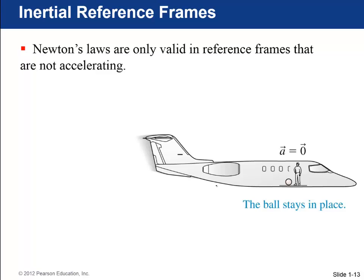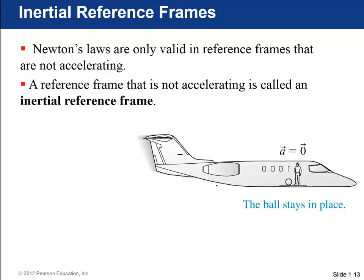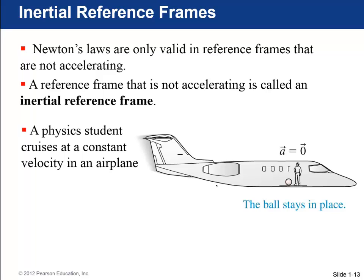Next concept in this chapter is called inertial reference frames. It turns out that these Newton's laws, like Newton's first law for example, is only valid in reference frames that are not accelerating. A reference frame that is not accelerating is called an inertial reference frame.